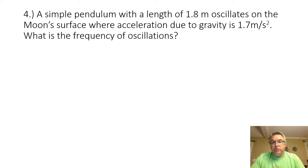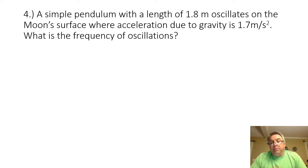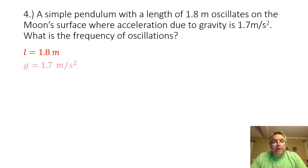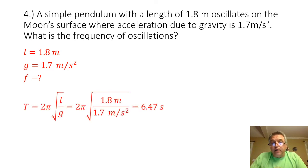Problem four: a simple pendulum with a length of 1.8 meters oscillates on the Moon's surface where acceleration due to gravity is 1.7 meters per second squared. What is the frequency of oscillations? This is solved the same way as problem three — the only difference is the pendulum is now on the Moon. The length is 1.8 meters and gravitational acceleration is 1.7 meters per second squared. Finding the period using the pendulum formula with those values gives a period of 6.47 seconds.